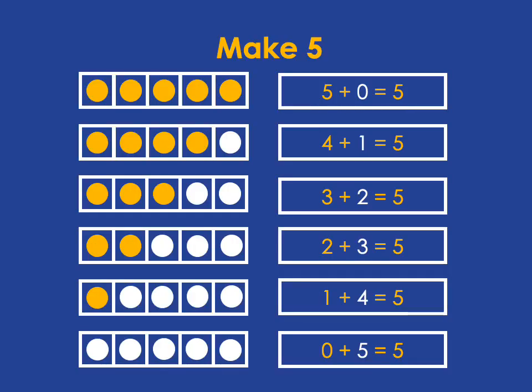So the kind of facts you need to know really fluently are these: 5 plus 0 is 5, 4 plus 1 is 5, 3 plus 2 is 5, 2 plus 3 is 5, 1 plus 4 equals 5, and 0 plus 5 equals 5.